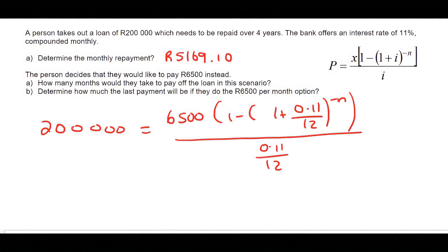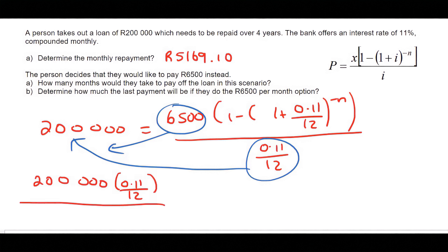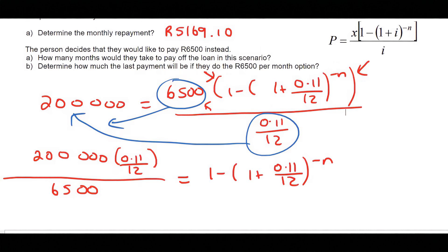This is now a time calculation. We've got videos on that where you have to use logs to solve for n. What I always tell students is to take the 6,500 to the left and take this one over to the left as well. We get 200,000 times 0.11 over 12 over 6,500. On this side we're still left with this over here. Because we're going to be using logs, we do not want to round off our answers at all. Logs are extremely sensitive functions where if you round off, you'll change your answer significantly. When I type this left-hand side, I get 11 over 39, and to avoid writing all the decimals, I keep it as a fraction.